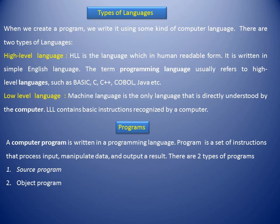There are two types of languages: high-level and low-level language. High-level language is written in simple English, in human-readable form. The term programming language usually refers to high-level languages such as Basic, C, C++, Java, etc.